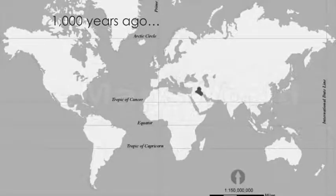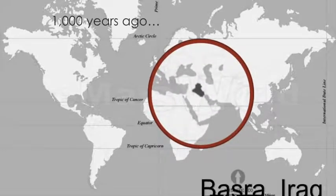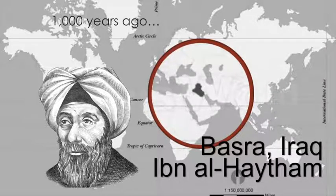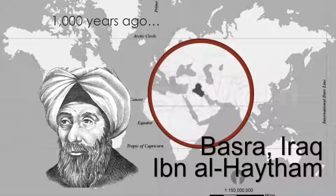The scientific method dates to a thousand years ago and it was originated in a place called Basra, Iraq, by Ibn al-Haytham. Ibn al-Haytham was a philosopher and a scientist in search for the truth. He dedicated his life to gathering information that would explain the world around him, and it was because of this obsession with the truth that we came to have what we call the scientific method.